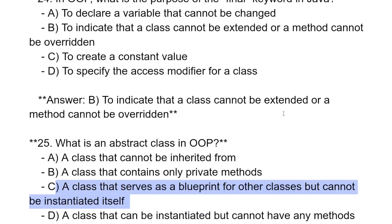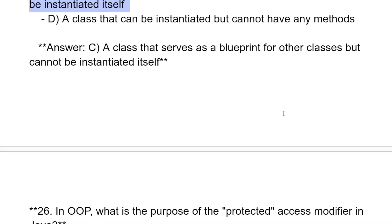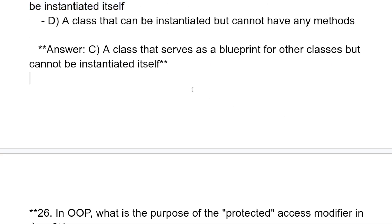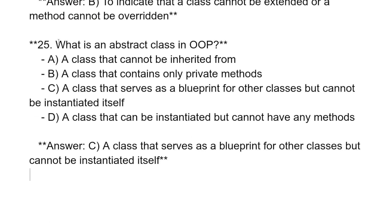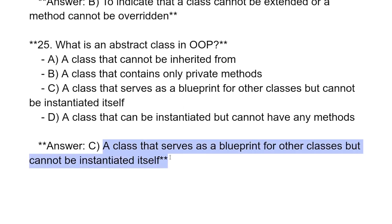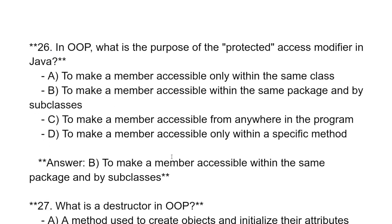The first question is: What is the abstract class in OOP? A class that serves as a blueprint for other classes but cannot be instantiated itself is called the abstract class.